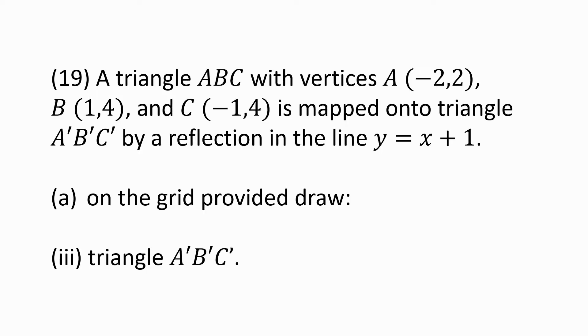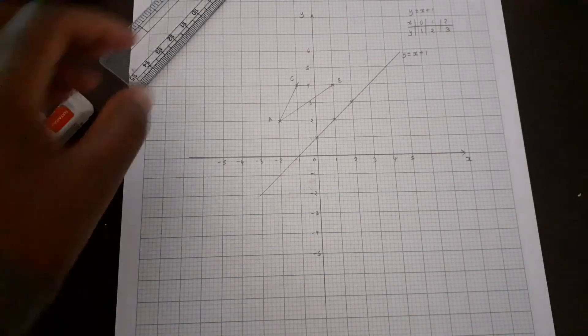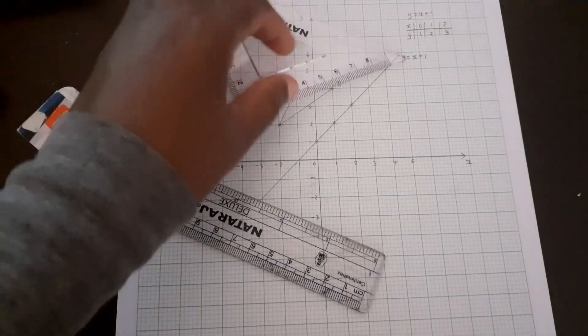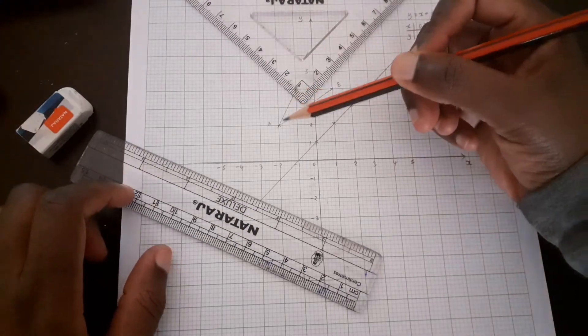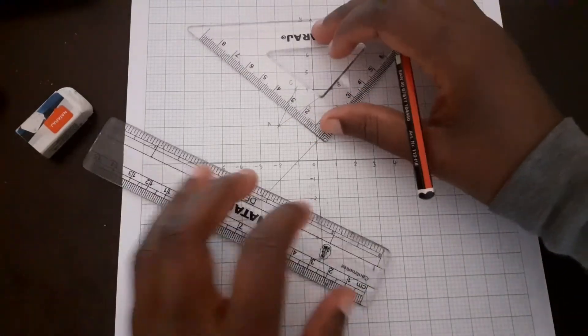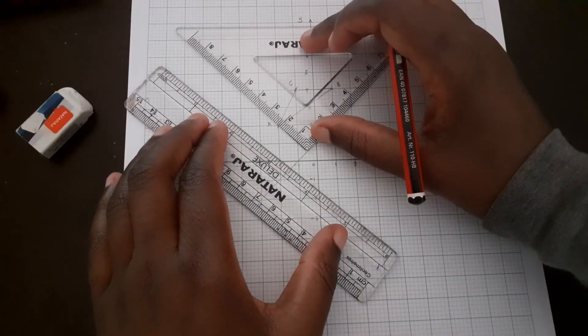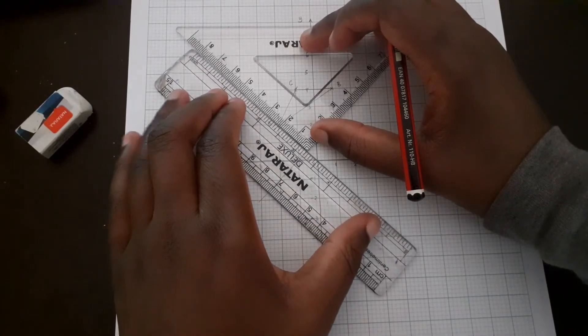Part A3: Draw triangle A'B'C'. To perform the reflection, we are going to use our ruler and a set square. For the reflection, it's about the perpendicular distance from point A to the reflection line. You need to map the perpendicular distance to the reflection line.